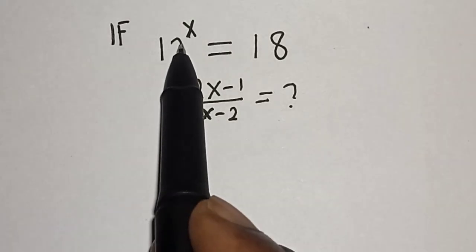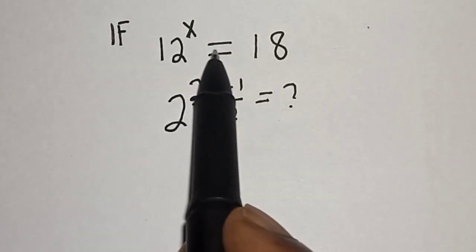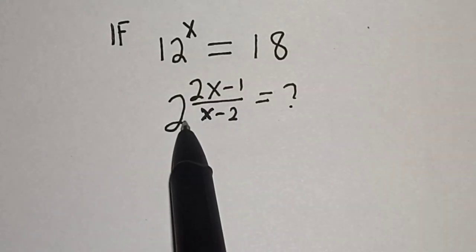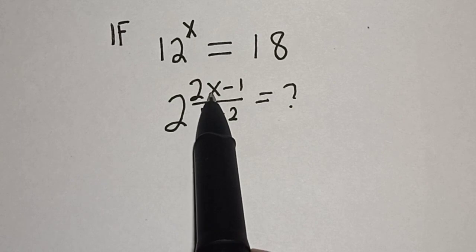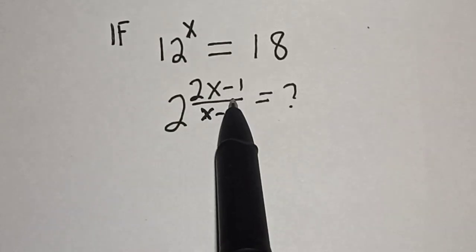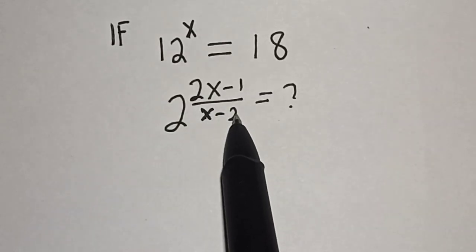If 12 raised to the power of x is equal to 18, what is the value of 2 raised to the power of 2x minus 1, divided by x minus 2?